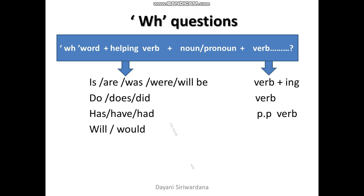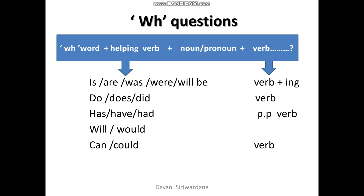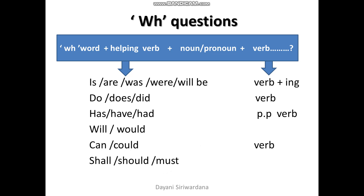Now think about the helping verb and the verb. If we use is, are, was, were, or will be as the helping verbs, -ing should be added to the verb.